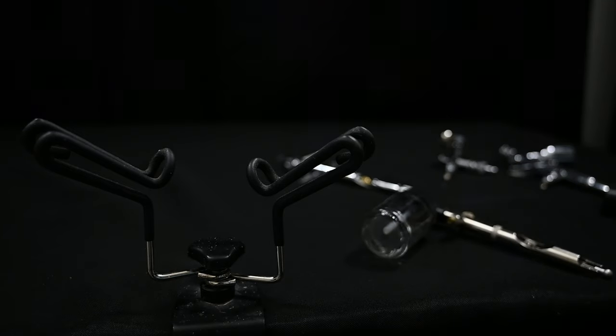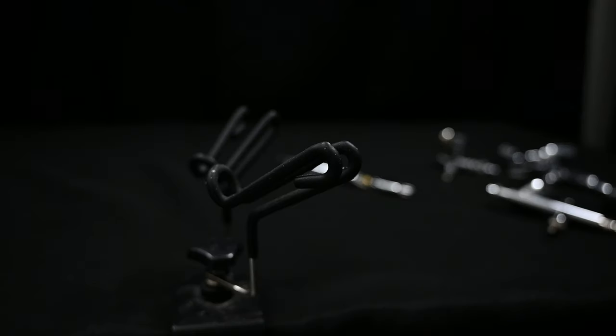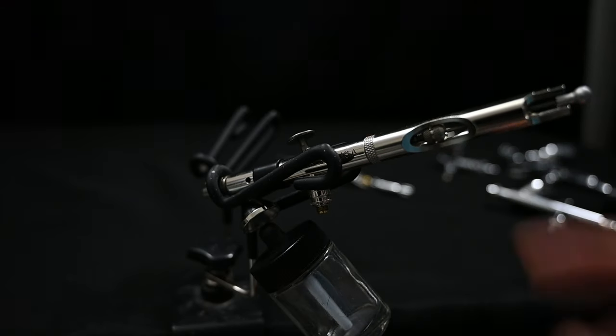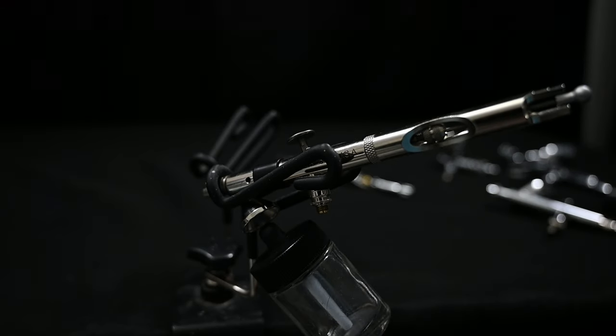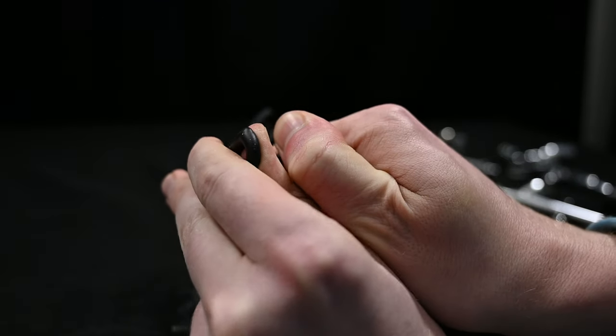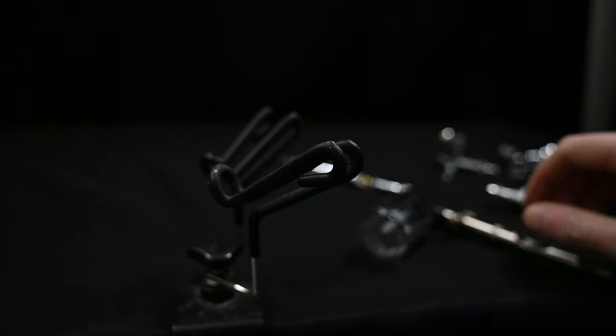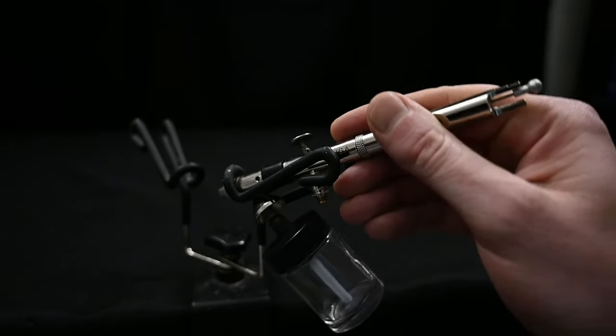This is the only airbrush that I own that doesn't fit this holder right out of the box. So I was watching a really good video on the Iwata YouTube channel, and they said that you can kind of bend these out a little bit just by prying them. That way, you can get it to fit a more unusual airbrush like the Badger 360. So I tried that out.